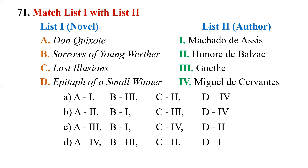The answer is option D: A - Don Quixote written by Miguel de Cervantes; B - Sorrows of Young Werther by Goethe; C - Lost Illusions by Honoré de Balzac; D - Epitaph of a Small Winner by Machado de Assis. Let's look at each one of them.